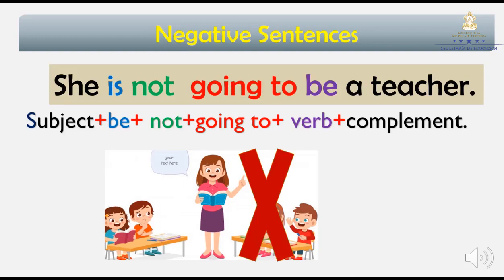And what do you need in order to make a negative sentence? I have an example: She is not going to be a teacher. You are going to need a subject — she. Verb to be — is. Then not. Going to. Plus verb — to be. And then a teacher again, which is the complement and the last part of the sentence. She is not going to be a teacher. This is the negative example.